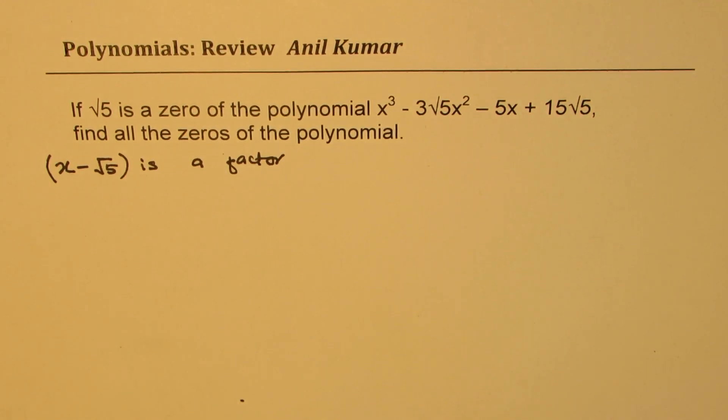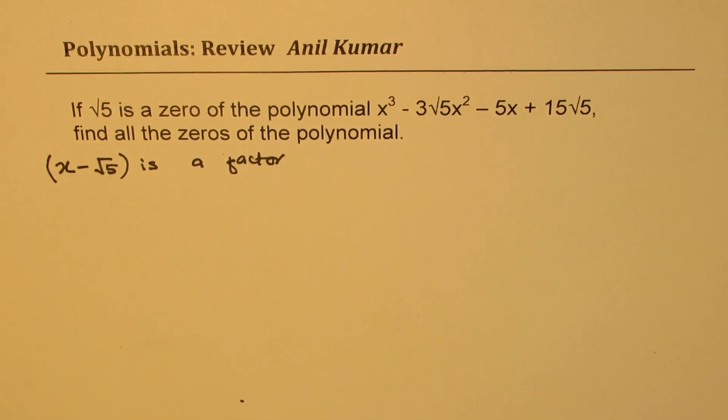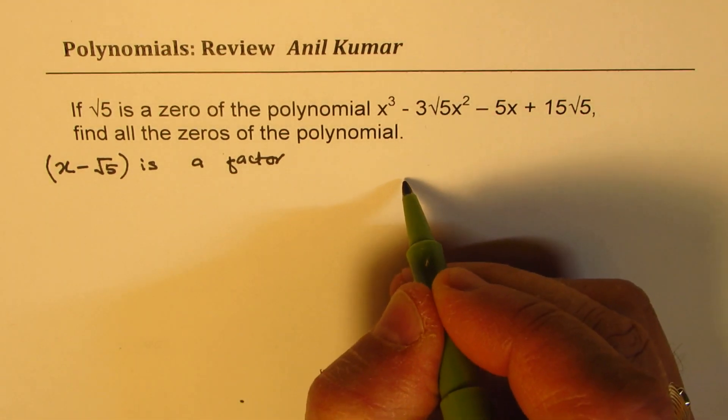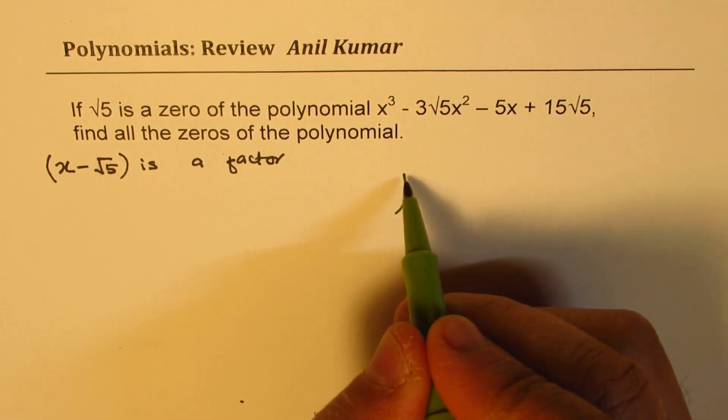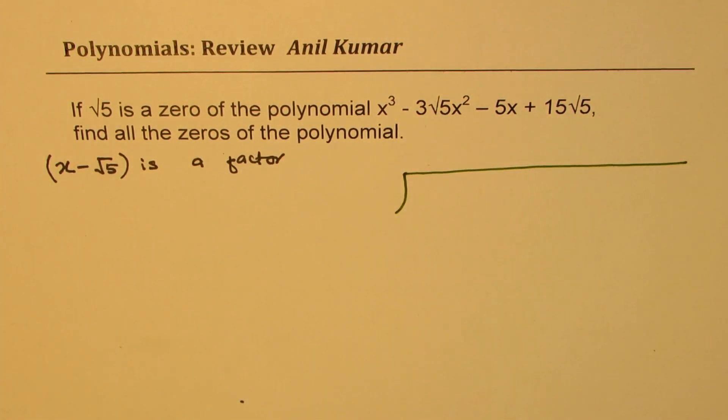What we can do here is divide the given polynomial with x minus square root 5 to get the other factor. The order of the other factor will be 2, will be a quadratic equation. And we can use quadratic formula or factor it to find the other zeros.